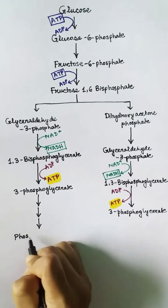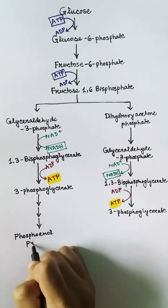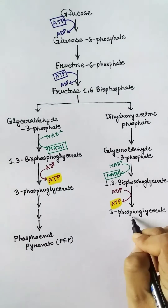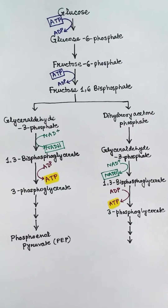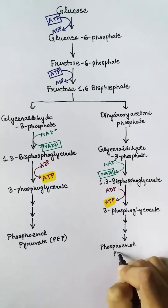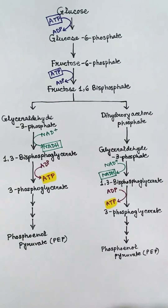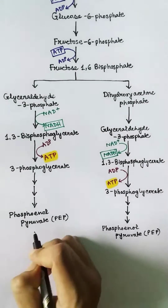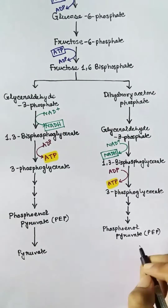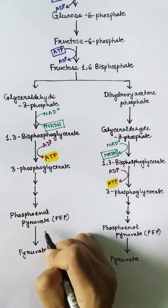The second phase of ATP production occurs when phosphoenolpyruvate (PEP) is converted into pyruvate. During this conversion, another pair of ATPs are produced — one from each phosphoenolpyruvate molecule — giving two more ATPs.